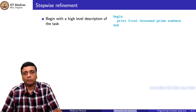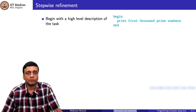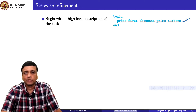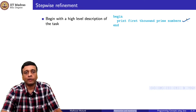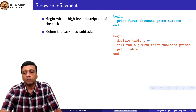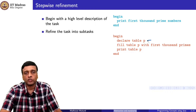Let us look at the process of refining a problem down to smaller pieces. Usually when we have a complex problem, we start with a high-level description of the task — for example, 'print the first 1000 prime numbers.' This does not say anything about how to do it, just what is to be done. As a first step, we might decide we need to store these prime numbers somewhere, so we declare a table p, fill it with the first 1000 primes, and then print the table.